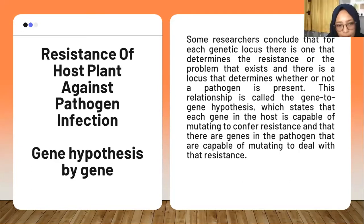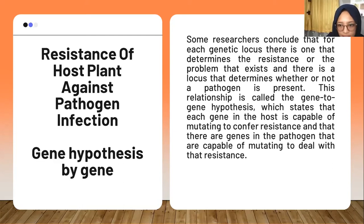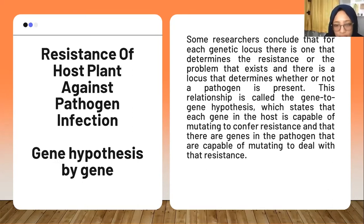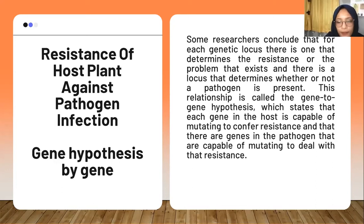The resistance of host plants against pathogen infection is explained by the gene-to-gene hypothesis. Some researchers conclude that for each genetic locus, there is one that determines resistance or susceptibility, and there is a locus that determines whether or not a pathogen is virulent. This relationship is called the gene-to-gene hypothesis, which states that each gene in the host is capable of mutating to confer resistance, and that there are genes in the pathogen capable of mutating to overcome that resistance.